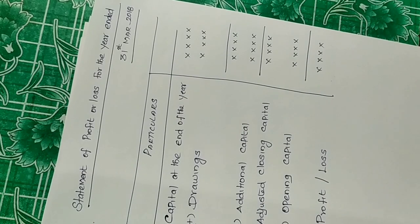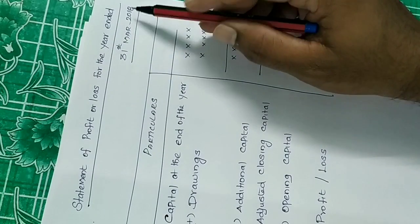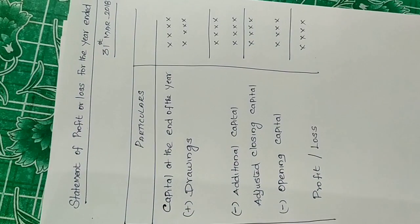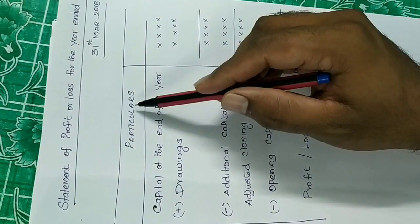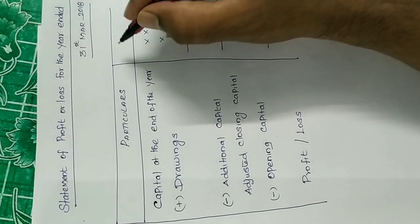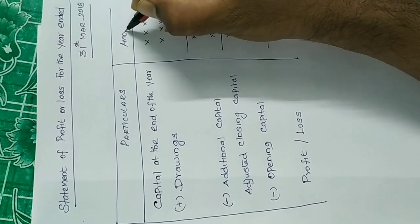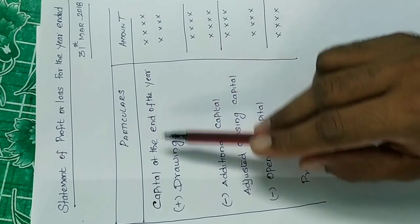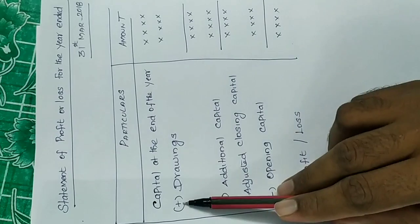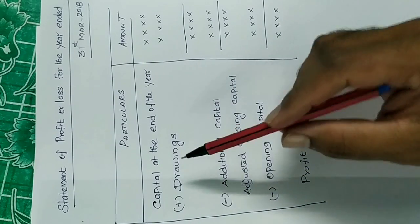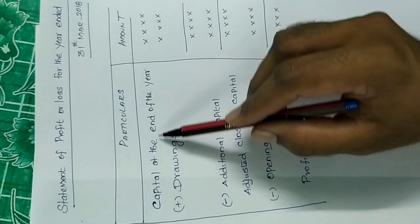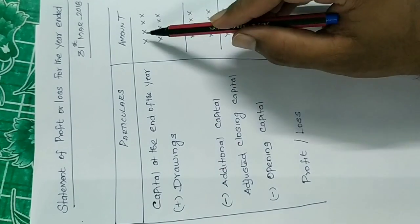The first stage is to find the statement of profit or loss for the year ended 31st March 2008. This is a format. In the format, you need to find the figures at the end of the year. So the closing capital — add drawings if we had drawings from the business — gives us the closing capital at the end of the year.